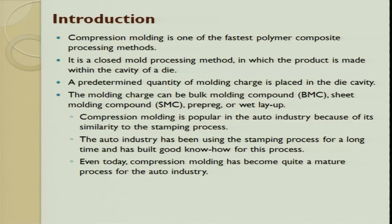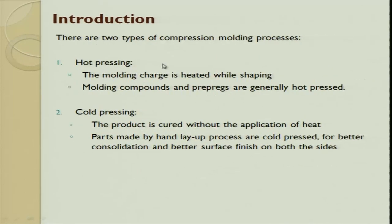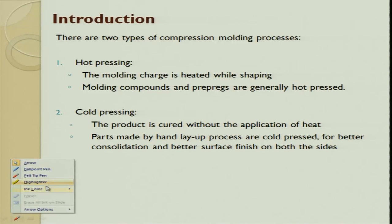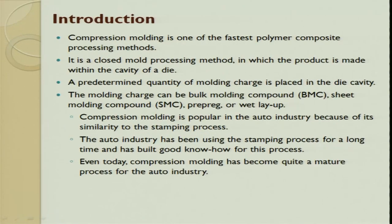Compression molding is one of the fastest polymer composite processing methods. It is a closed mold process, so you are assured of good surface quality on both the front and back surfaces. The product is confined within a cavity, and this process requires a die. A predetermined quantity of mold charge is placed in the die cavity.